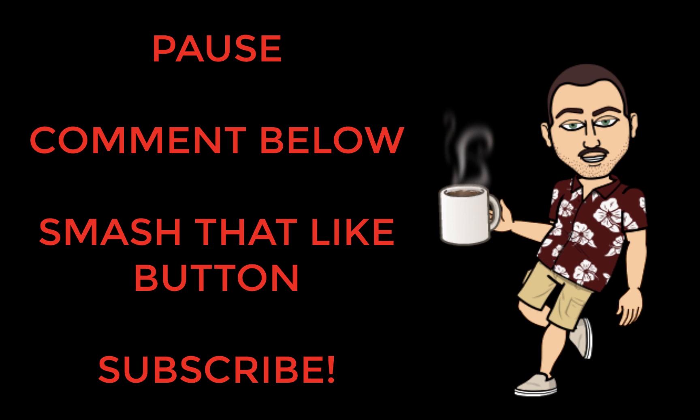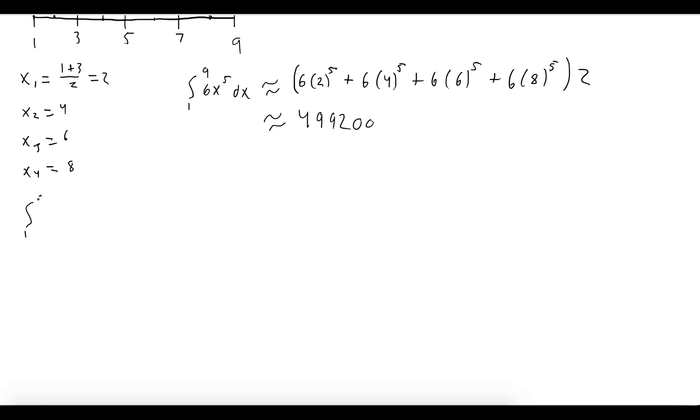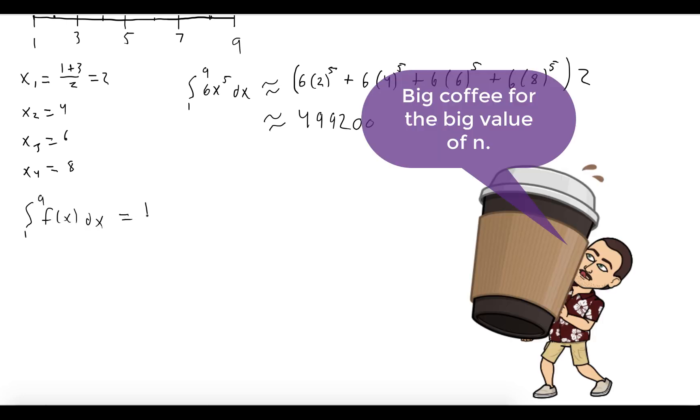Okay, back to the show. Now we can evaluate the integral from 1 to 9 of our function, which is equal to, by definition, the limit as n goes to infinity of the sum from i = 1 to n of our function evaluated at our sample point times delta x.